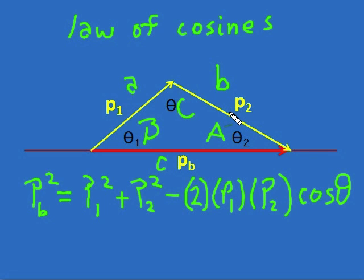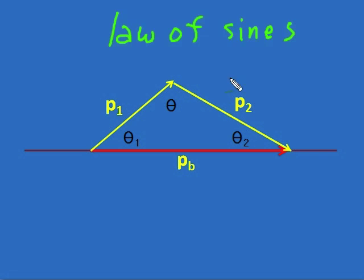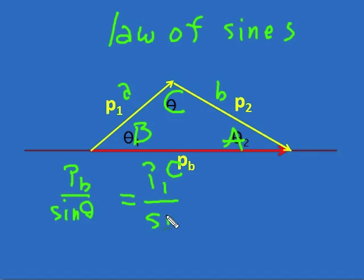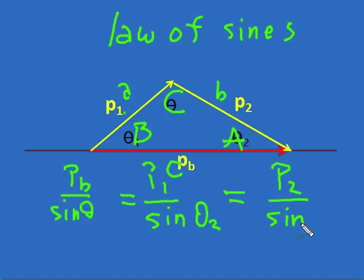Now let's look at how we would solve using the law of sines. With sides and angles labeled as a, b, c and A, B, C respectively, we write: pb over sin theta equals p1 over sin theta1 equals p2 over sin theta1. Study these relationships and you can use them to solve problems of oblique collisions.